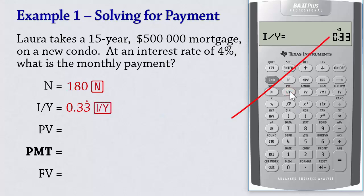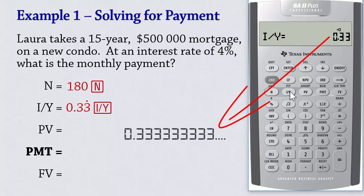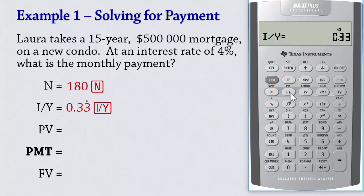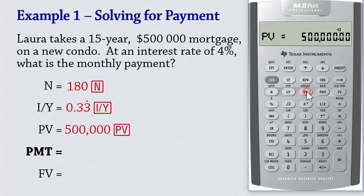Note that there are more decimal places not displayed by the calculator because it is set to 2 decimal places. Although the remaining decimal places are not displayed, they will still be used in the computations. It will be incorrect to just type 0.33 and press IY — you will be missing the remaining decimal places. For present value, we enter 500,000 PV. Since we have 0 balance at the end of 15 years, we enter 0 future value.